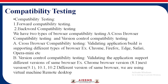Next is compatibility testing. It is the process of checking whether the build is compatible with the user's expected platform or not. The user's expected platform includes the operating system and the browser. It is called software compatibility testing. It has two types: forward compatibility testing and backward compatibility testing. Forward compatibility testing is when the build is correct but the operating system or browser does not work properly.